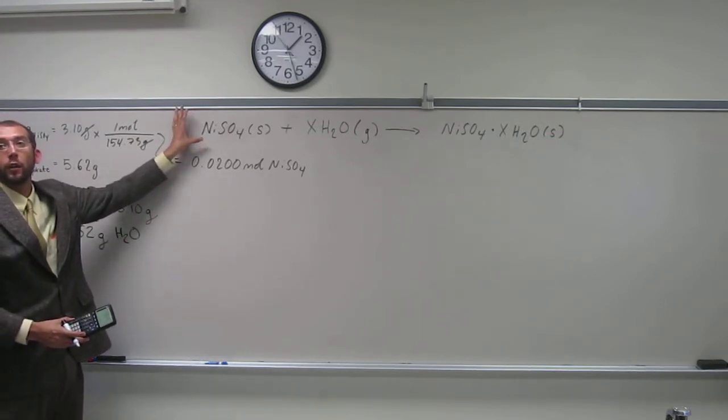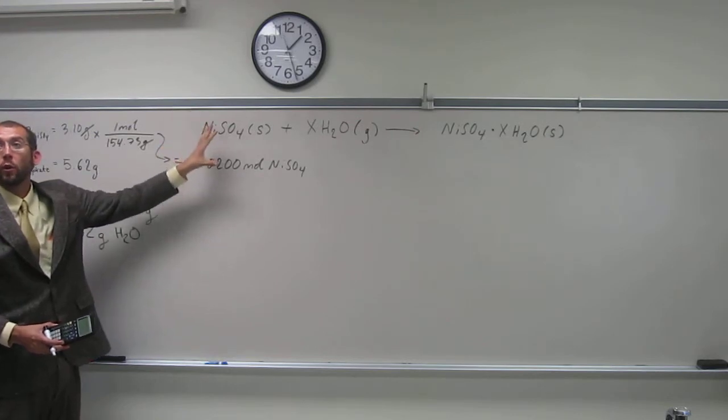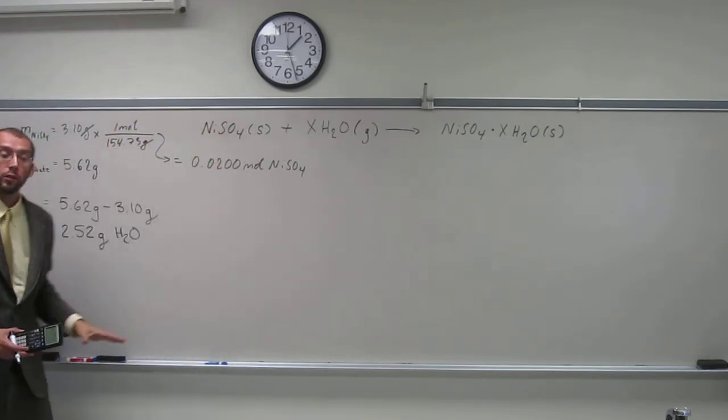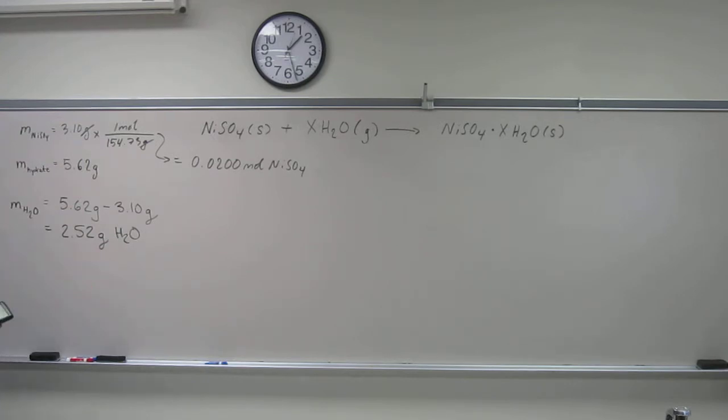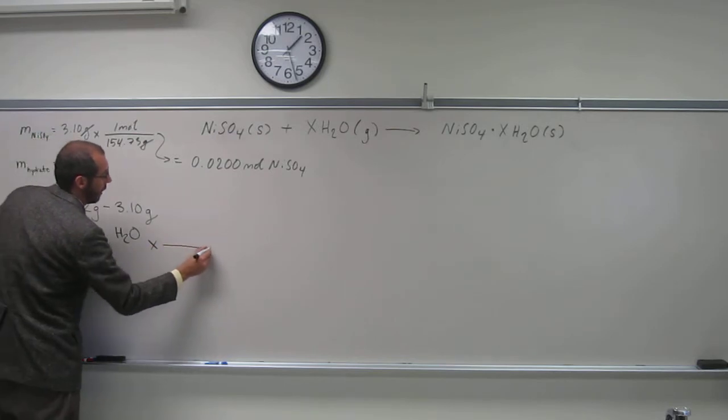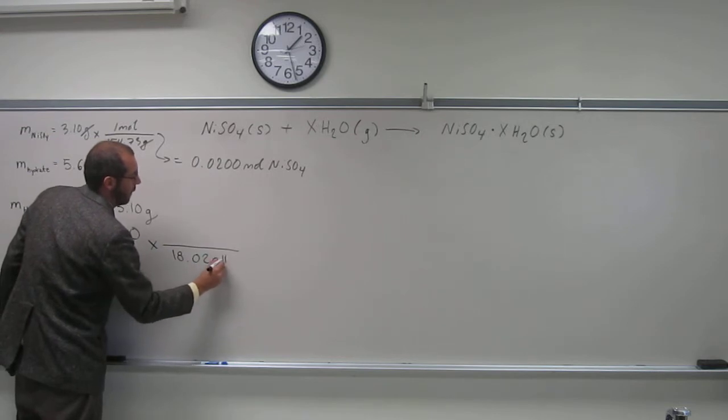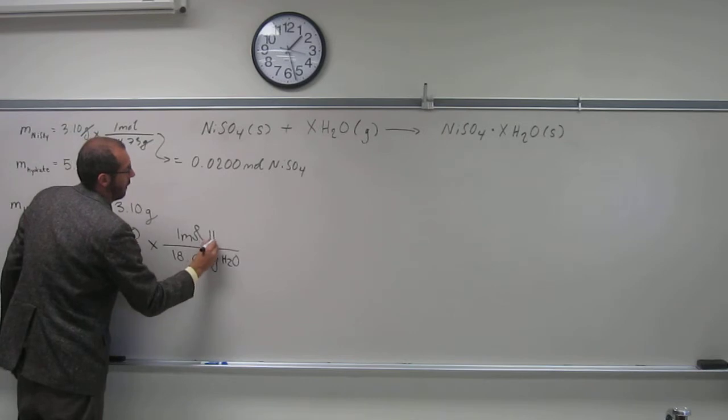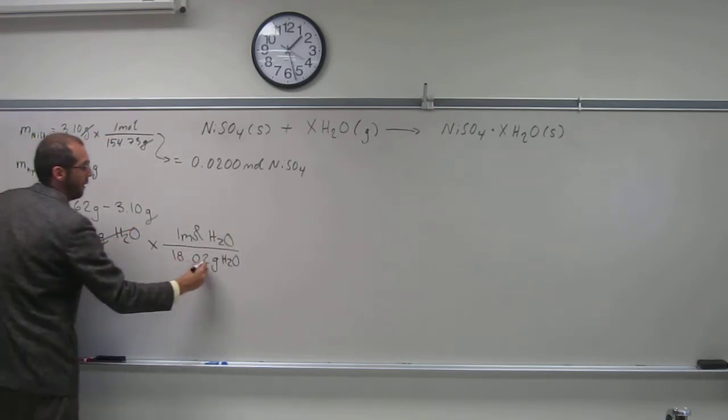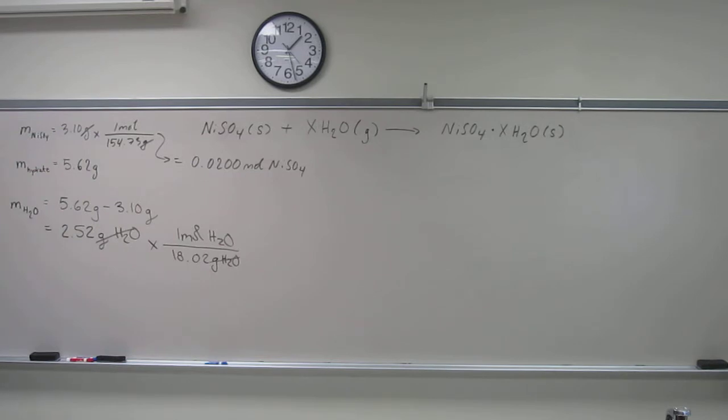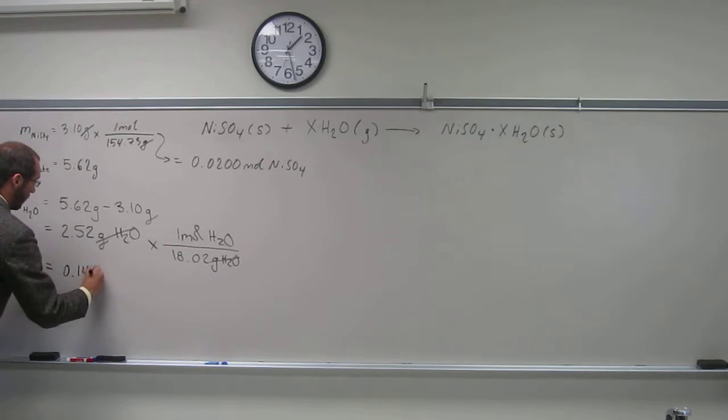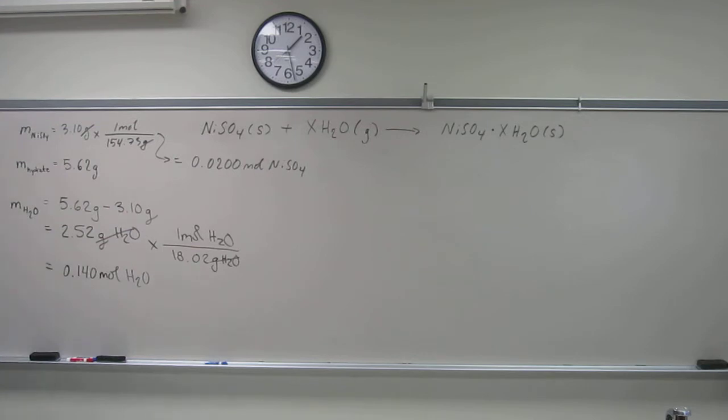Remember the molecular, or the chemical equation gives us the mole to mole ratio, not the mass to mass ratio. So what do we have to do to this number? Convert it to moles, right? Do you remember the molar mass of water? 18.02 grams per mole. So we get 0.140 moles of water. Is everybody okay with that?